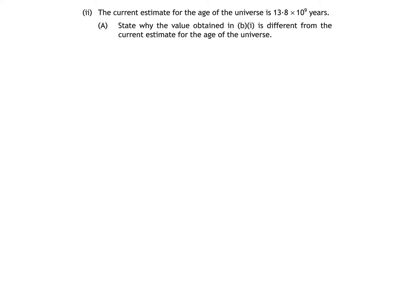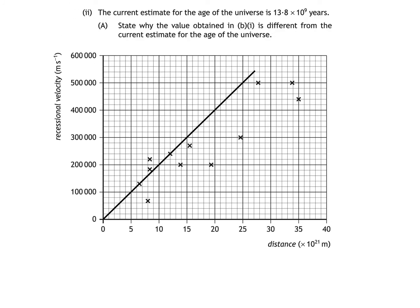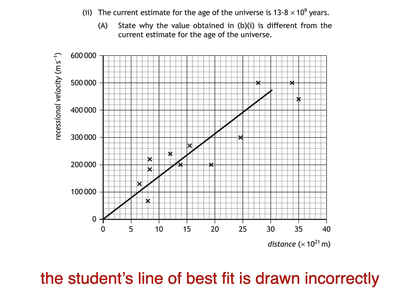Now, if you remember the graph from before, you might have spotted something a little bit fishy about it. That best fit line looks more like a worst fit line, as far as I'm concerned. There are two points to the left-hand side of the line and eight to its right-hand side. If I was drawing a best fit line with those points, it would look a little bit more like this. So one answer we could give is that the student's line of best fit is drawn incorrectly.